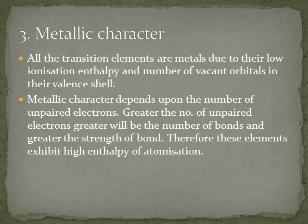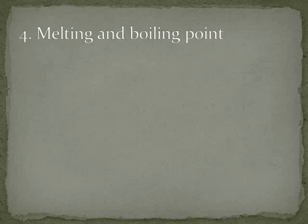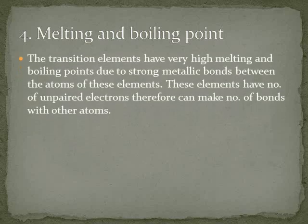Enthalpy of atomization means that one atom is separated from the whole element — the whole thing is isolated. Enthalpy of atomization relates to melting and boiling point. Transition elements have high melting and boiling points because they form metallic bonds with a large number of electrons.